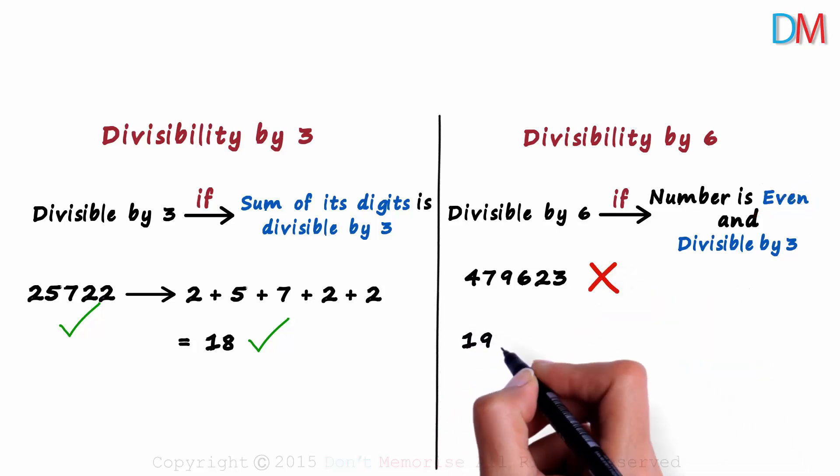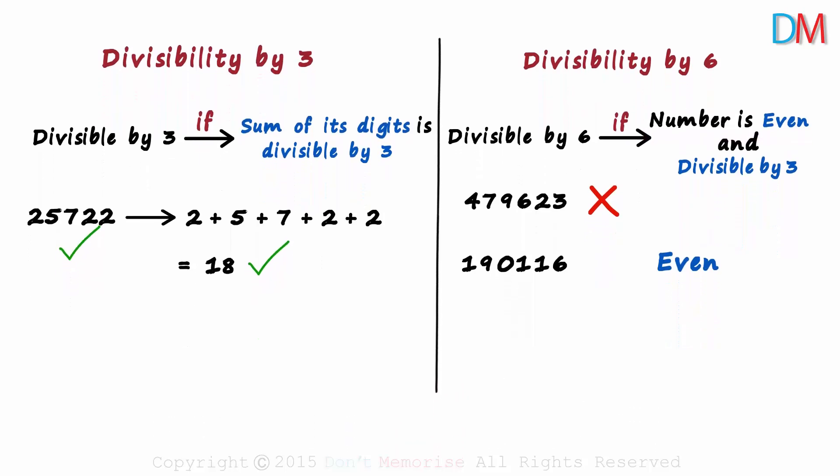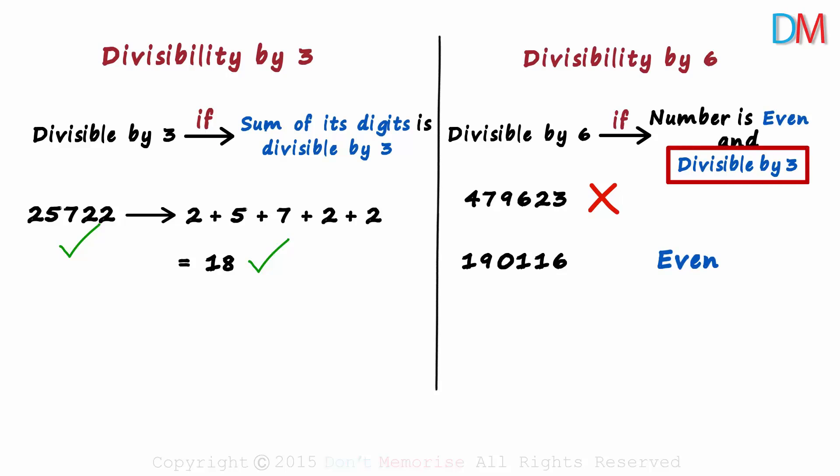Consider 190,116. This number is divisible by 2 as the last digit is divisible by 2. Hence it's even. The first condition is satisfied. Now we check for the second condition. We check if it is divisible by 3.